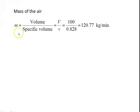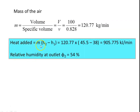Calculate the mass of the air: M = volume / specific volume = 100 / 0.88 = 120.77 kg/min. Heat added = M × (H2 − H1) = 120.77 × (45.5 − 38) = 905.775 kJ/min. The relative humidity at the outlet, directly from the psychrometric chart, is 54%. So heat added is 905.775 kJ/min and relative humidity at the outlet is 54%.